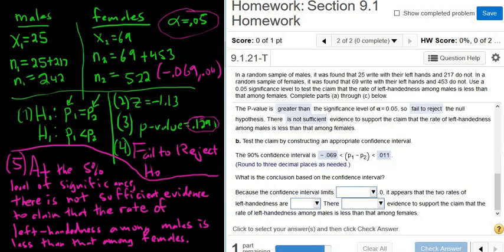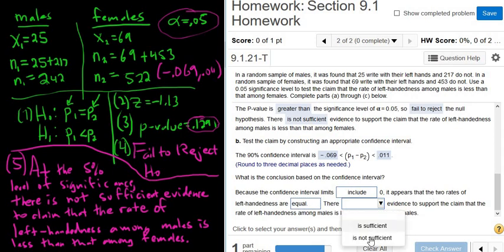Our confidence interval contains zero, ranging from negative 0.069 to 0.011. Whenever the confidence interval contains zero, we can't say the proportions are different. If you only had positive numbers, the first proportion would be bigger; only negative numbers means the first is smaller. Having both positive and negative means we can't say they're different. This agrees with the hypothesis test conclusion — we failed to reject the null, so we can't say they're different. It appears the two rates of left-handedness could be equal.